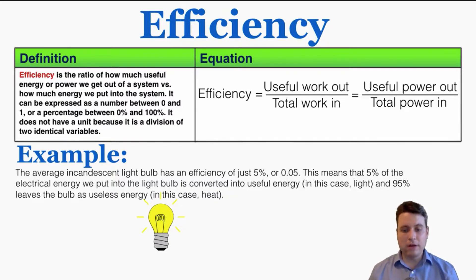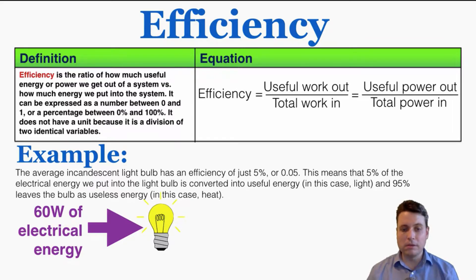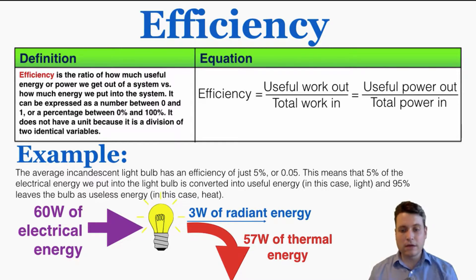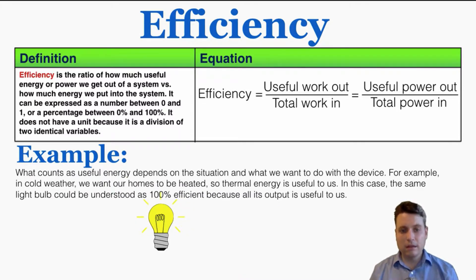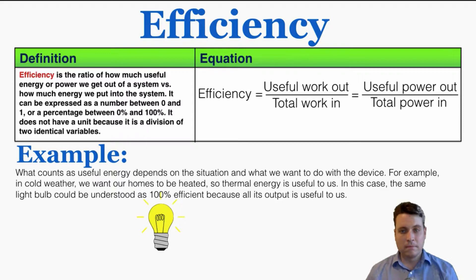Whenever we use an incandescent light bulb, only 5% of the electricity comes back as useful radiant energy — the rest is lost as heat. For a 60-watt bulb, 60 watts of electrical energy go in, but only 3 watts of radiant energy come out, and 57 watts leave as useless thermal energy. However, in cold weather when we want our homes heated, thermal energy is useful — so in that context the light bulb could be considered 100% efficient. What counts as useful energy is subjective and depends on the problem you're trying to solve.